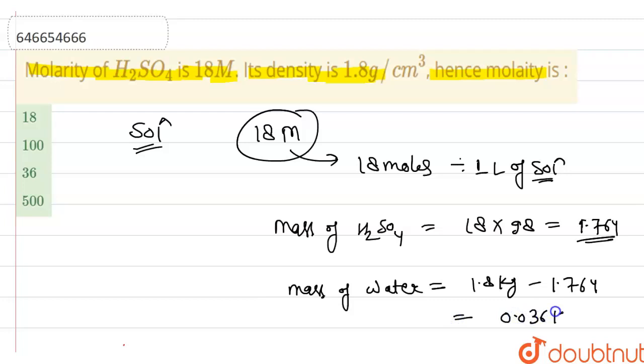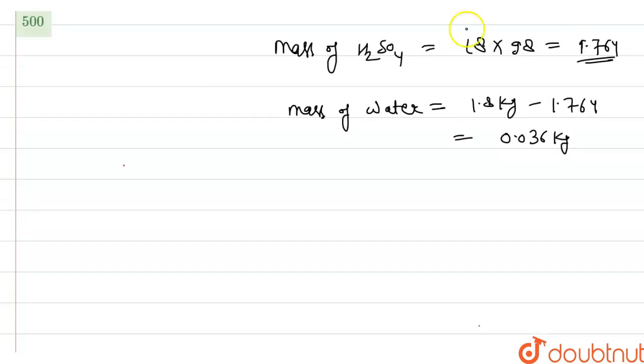So now applying the formula of molality: moles of solute divided by mass of solvent. So molality is equal to 18 moles divided by 0.036 kilogram, which is nothing but 500 molar.